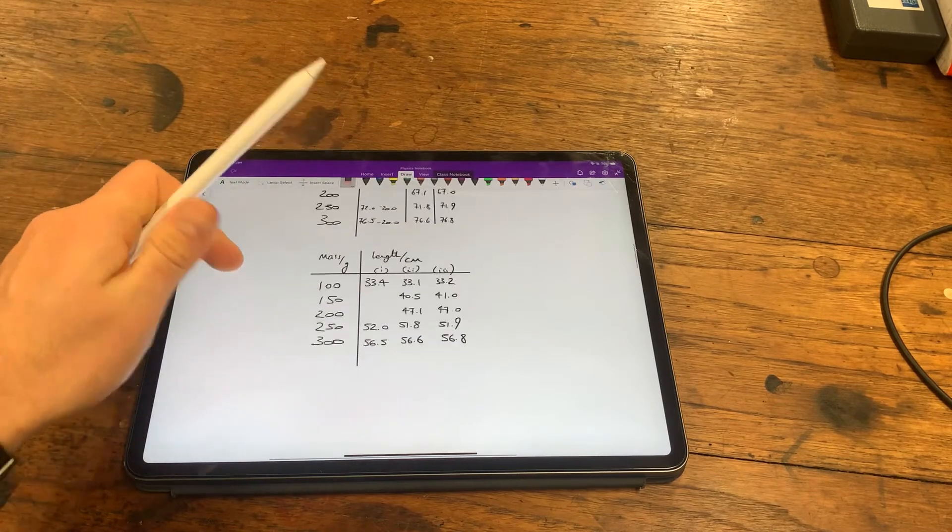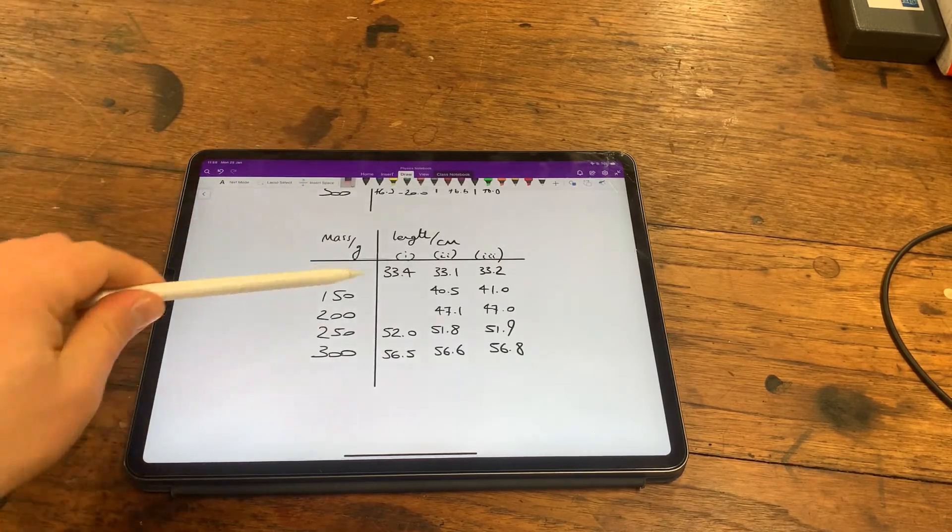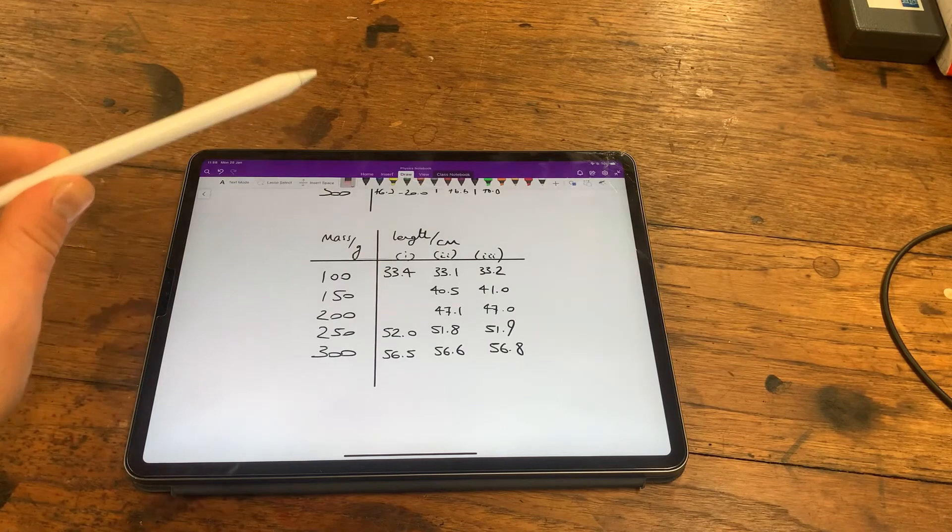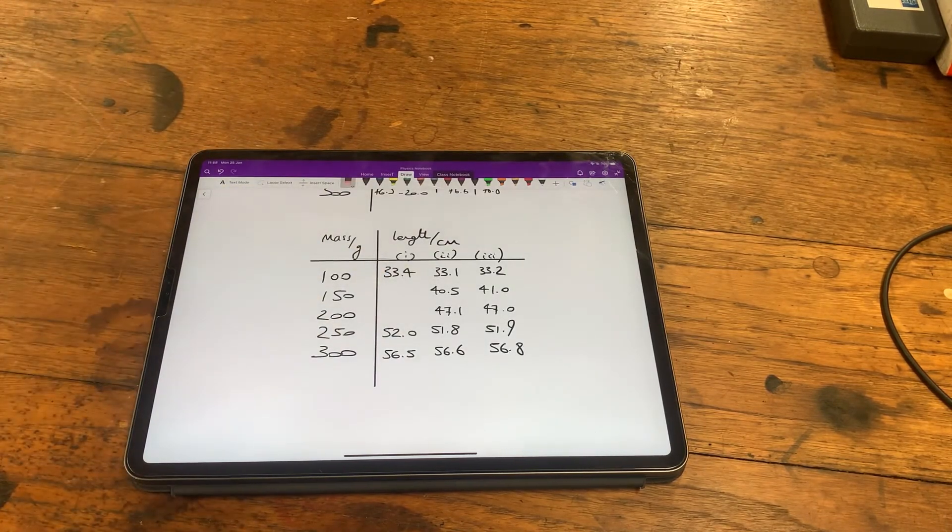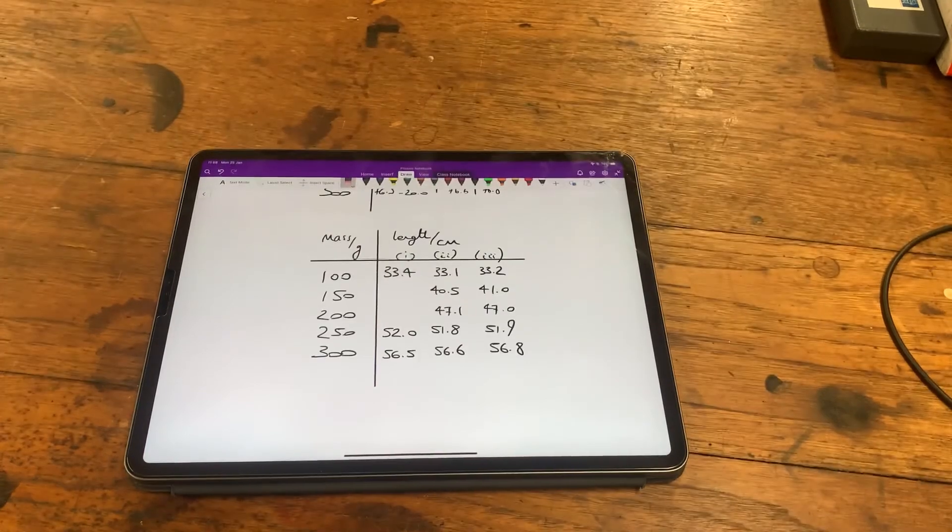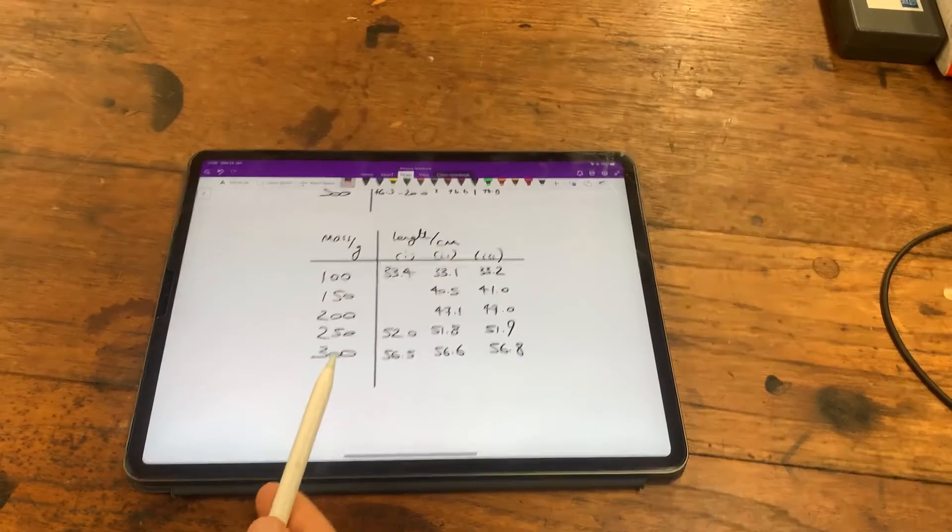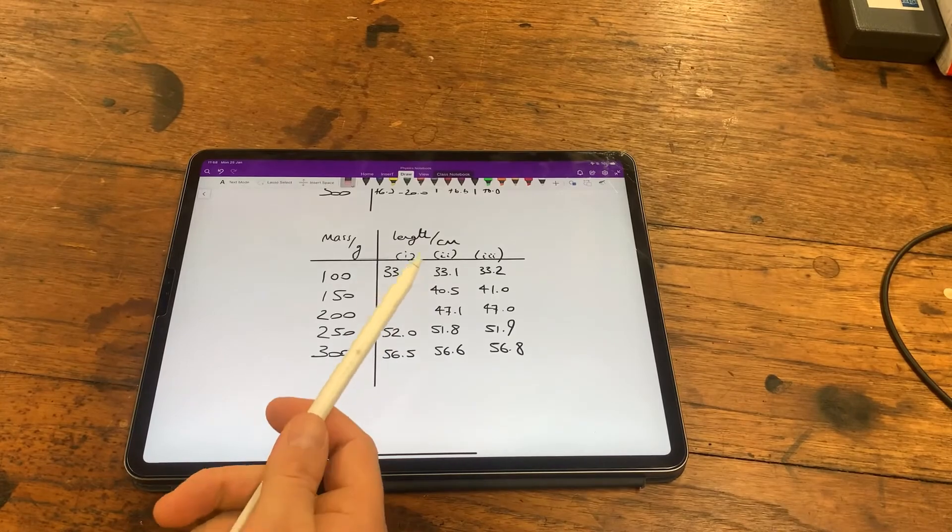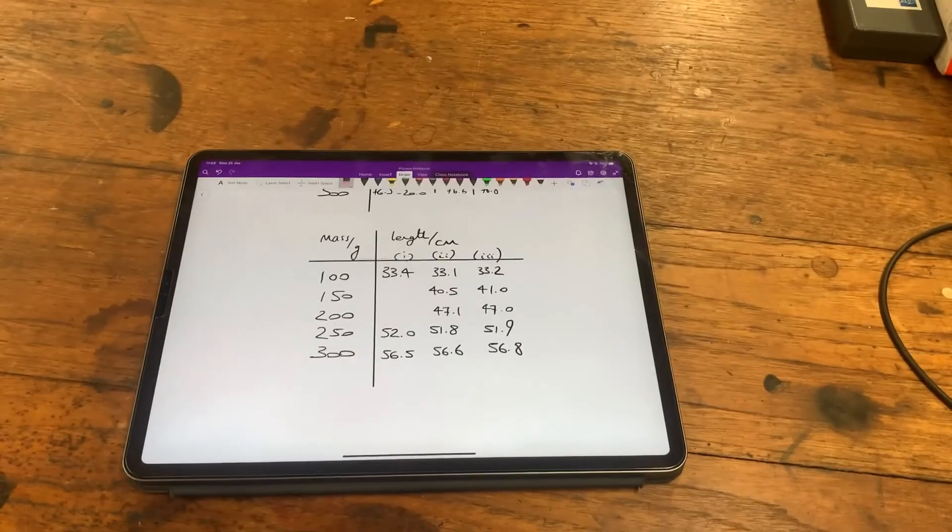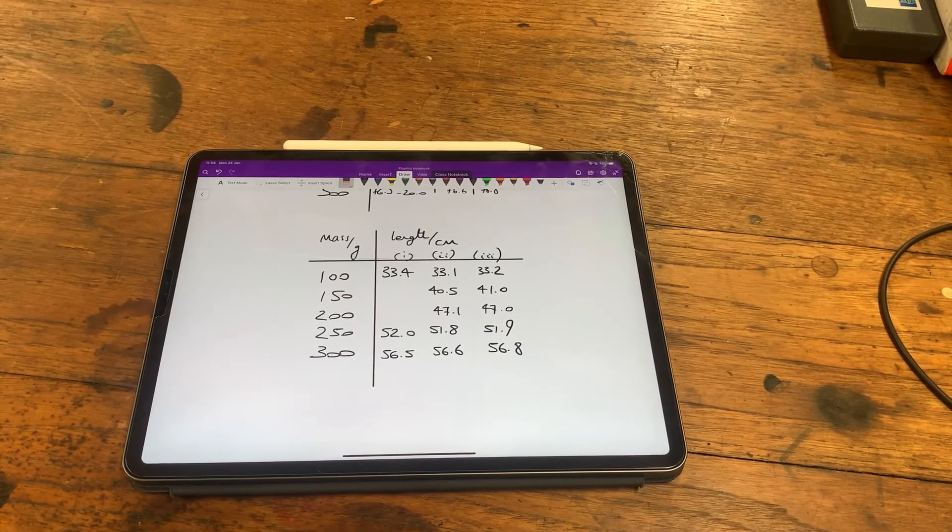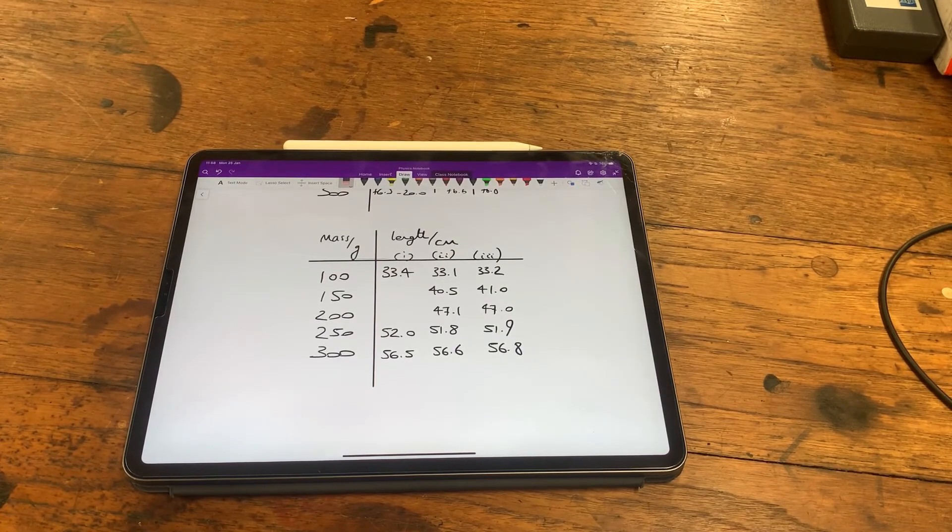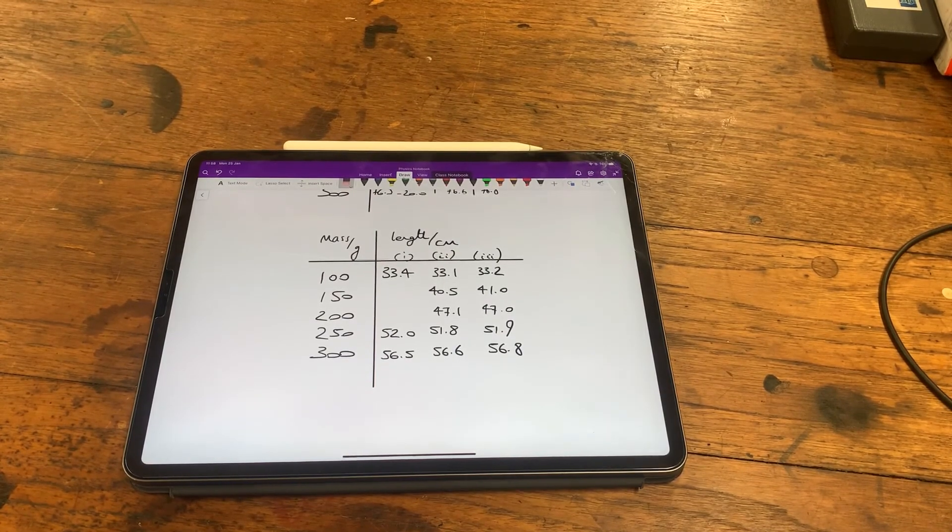I've actually created another table with my repeats, leaving gaps, and you'll notice the significant figures, the precision rather, of each result is appropriate given the instrumentation I was using. I was using masses to the nearest gram and I was using a ruler that measured to the nearest millimeter. You can now go and use those results with the theory I mentioned before to do a bit of analysis. I hope that's useful. Thank you very much.